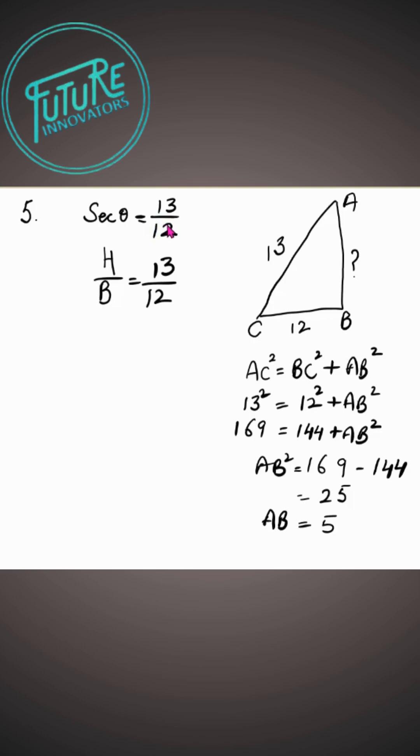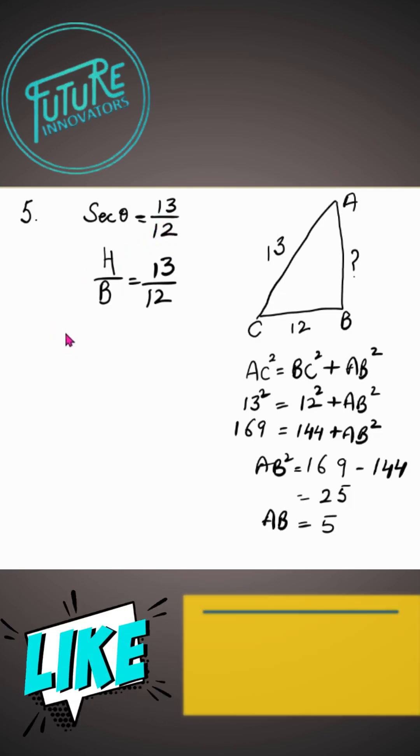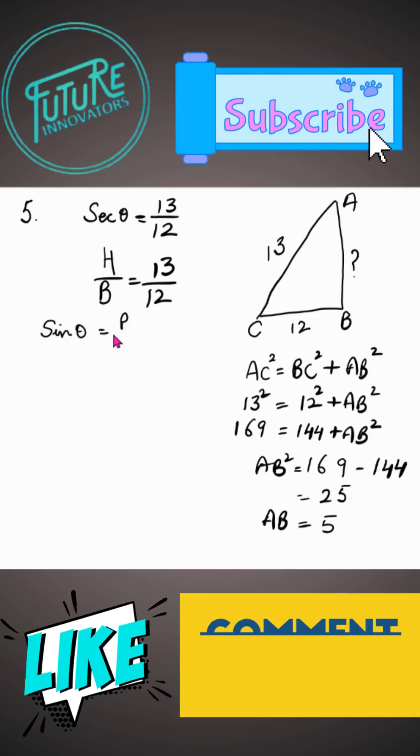Now secant theta is given, we have to find out other trigonometric ratios. First of all, sin theta. Sin theta is P upon H, we will directly put the value. Perpendicular is 5 and hypotenuse is 13.